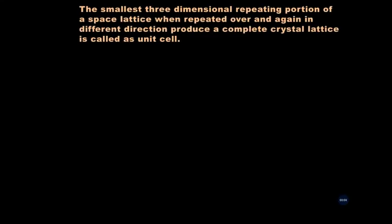Thus, unit cell is defined as the smallest three-dimensional repeating portion of a space lattice which, when repeated over and again in different directions, produces a complete crystal lattice. Unit cells or three-dimensional crystal structures are represented by using three axes.